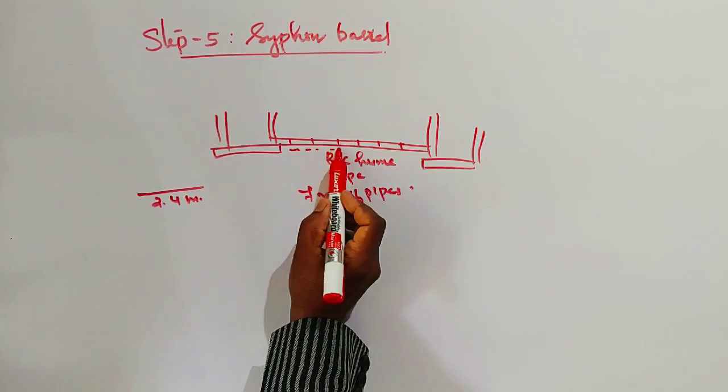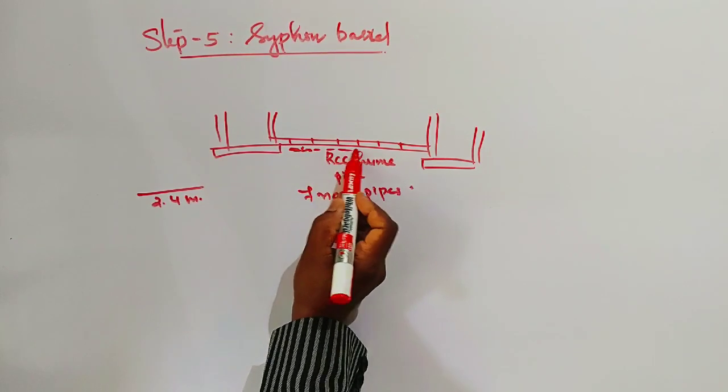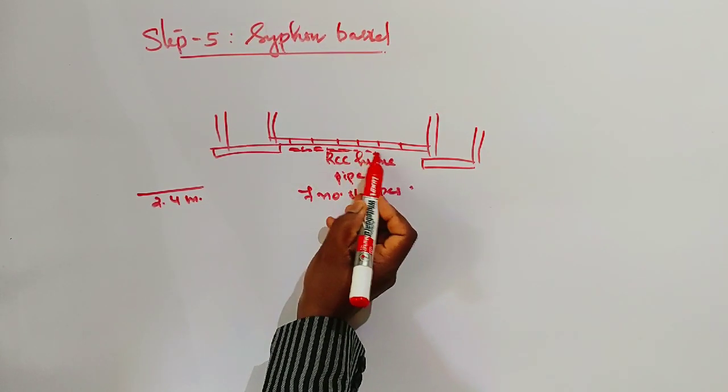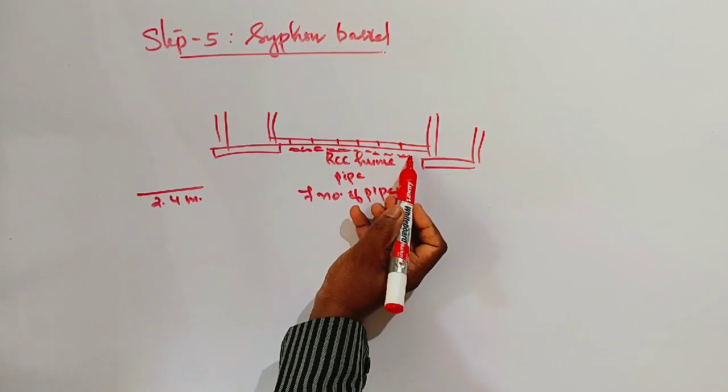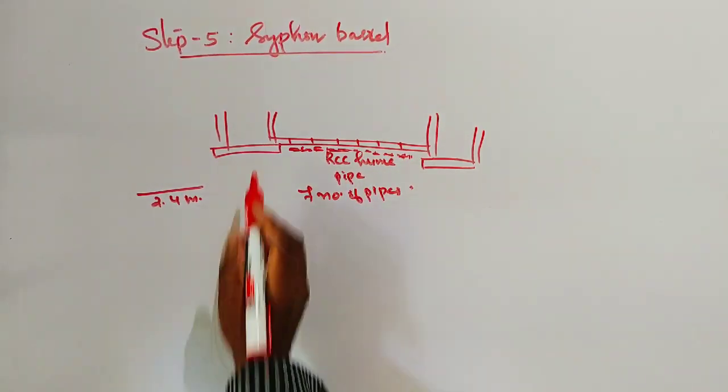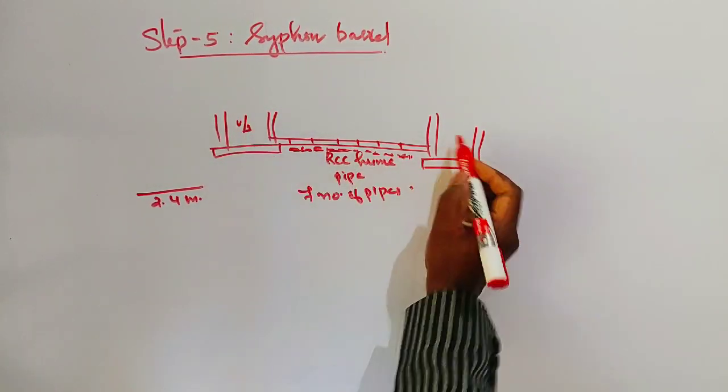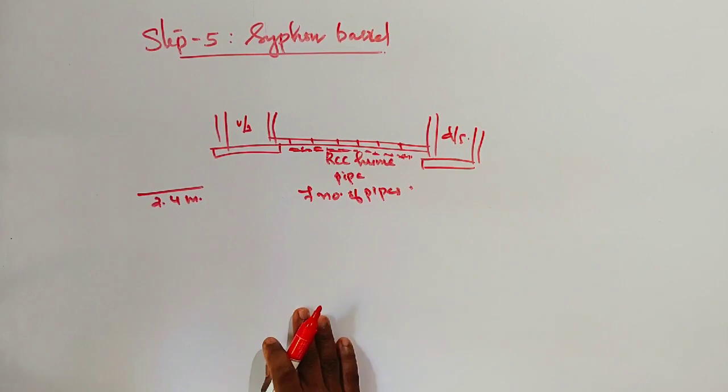These pipes are supported on bedding. The bedding consists of 30 centimeters thick concrete.